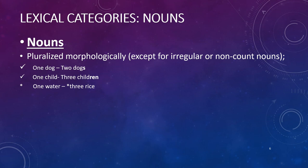One of the identifying features of nouns is that they can be pluralized morphologically, with some exceptions for irregular or non-count nouns. So if you take the word 'dog,' you can talk about one dog or two dogs — the 'z' sound at the end indicates the plural. One child becomes three children, again changing form morphologically. However, not every noun will pluralize — you can talk about one water but not three waters, though you can say one glass of water or three grains of rice. This can be one possible cue that leads us to believe something might be a noun.